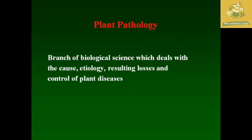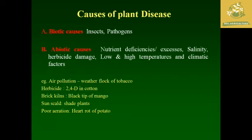While seeing about the causes of plant diseases, they are broadly classified into two causes. The first one is biotic causes, which are mainly caused by insects as well as pathogens. The abiotic causes are composed of nutrient deficiencies, excess salinity, herbicide damage, low and high temperature, and climatic factors. Some reasonable examples for abiotic causes are air pollution, which causes weather fleck of tobacco; the herbicide 2,4-D in cotton causes some damages; black tip of mango; sun scald; shaded plants having rotting of fruits; and poor aeration leading to heart rot of potato.